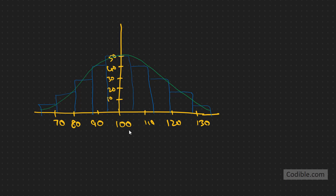This normal distribution tells us there's an average number of milk cartons the supermarket might sell on any given day based on past data. The actual number of cartons sold could be either higher or lower according to this distribution. Let's assume this normal distribution has a mean of 100 and a standard deviation of 15.